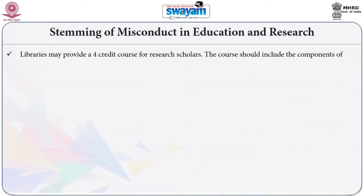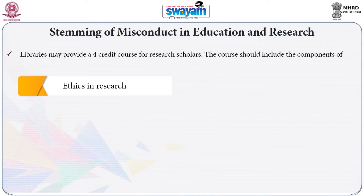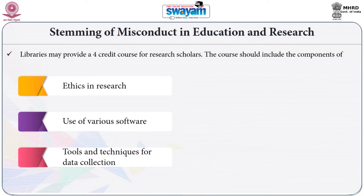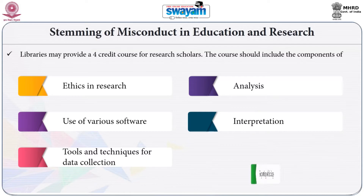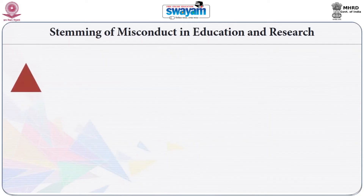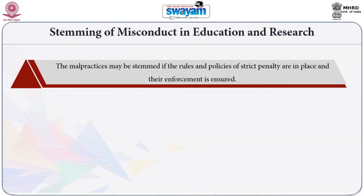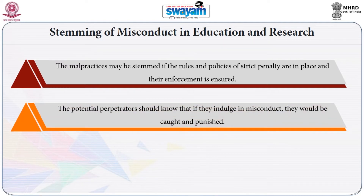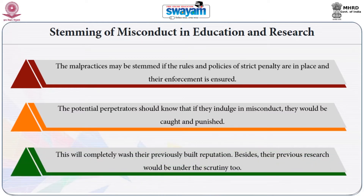Libraries may provide a four-credit course for research scholars. The course should include the components of ethics in research and use of various softwares, tools and techniques for data collection, analysis, interpretation and reporting of the findings. The malpractices may be stemmed if the rules and policies of strict penalty are in place and their enforcement is ensured. The potential perpetrators should know that if they indulge in misconduct, they would be caught and punished. This will completely wash their previously built reputation. Besides, their previous research would be under scrutiny too.